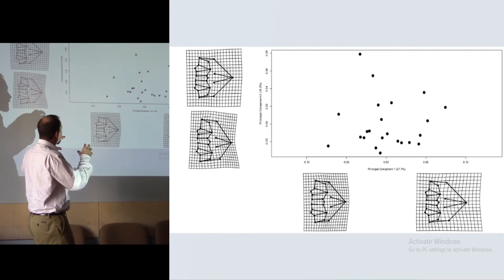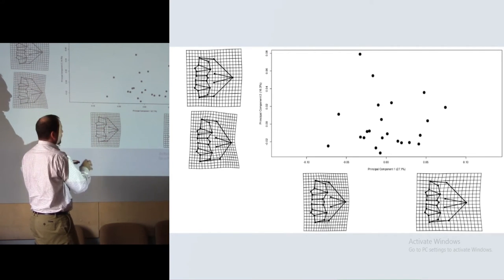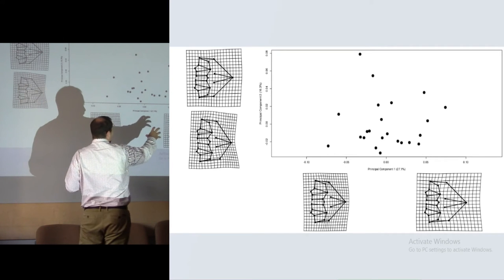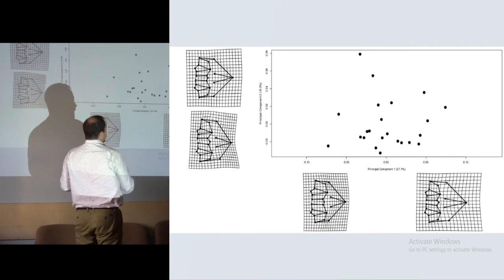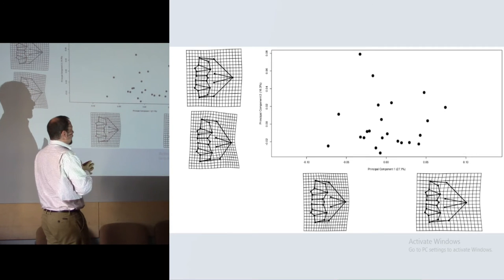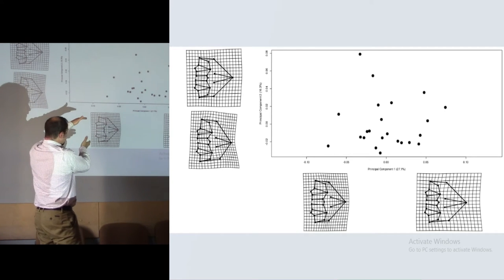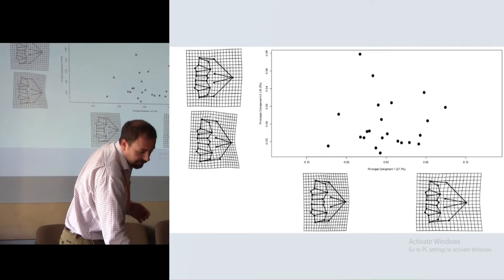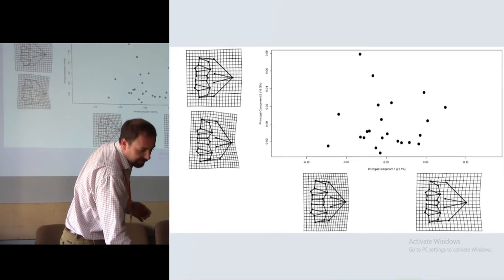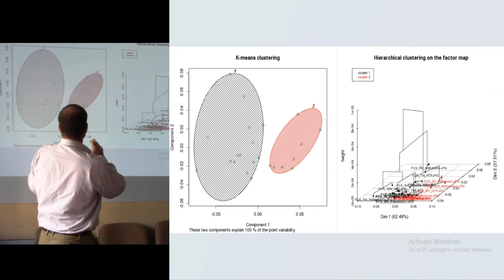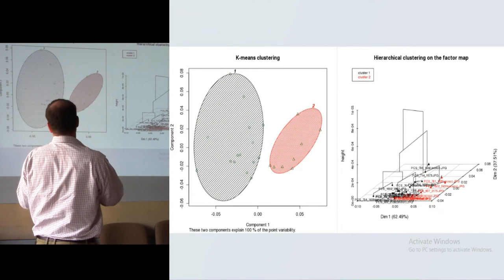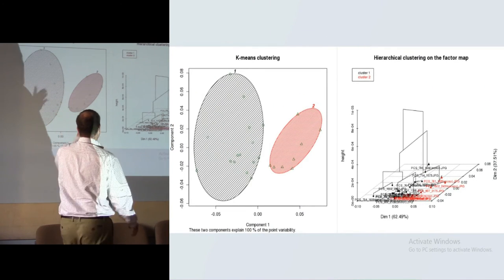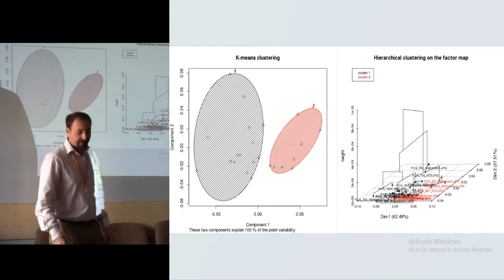If we see the shapes, the axis of the shapes, we can see that this is a more robust, more spread form than the other. So maybe these two groups mean that these are bulls and different cows. Okay.